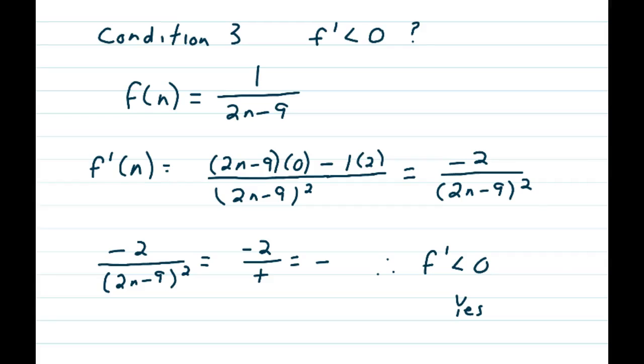Now, here's the other way of checking condition 3, finding if the derivative is less than 0. So you have this function, f of n equals 1 over 2n minus 9, and we find its derivative. So it's a quotient rule. So on the bottom, you have a 2n minus 9 quantity squared.